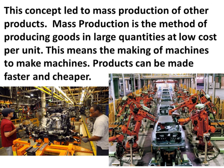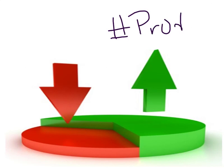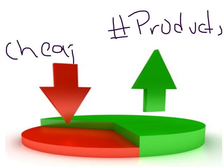This next picture shows machines actually building the bodies of cars — machines making machines. In mass production, if you can efficiently make a number of products all at one time, then in the long run it makes these products cheaper.